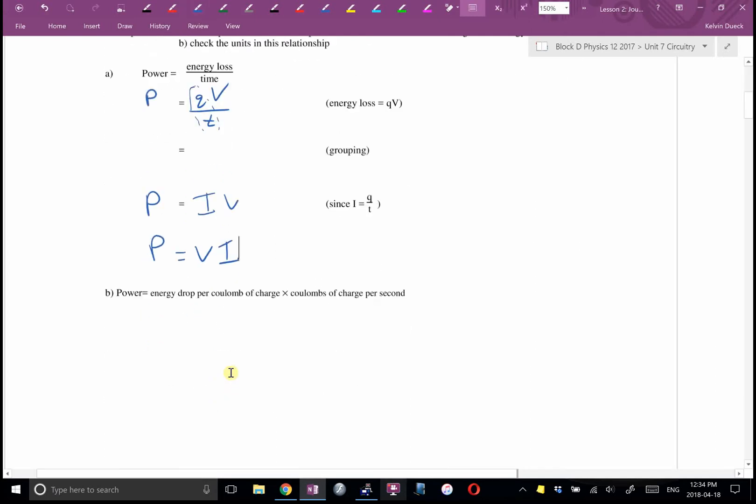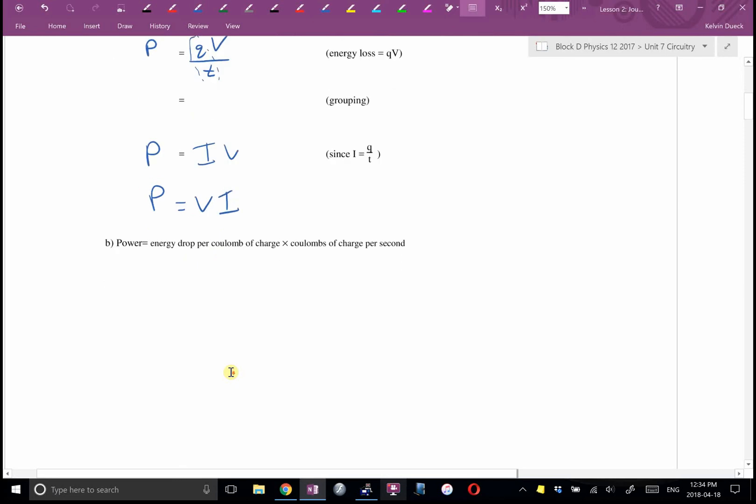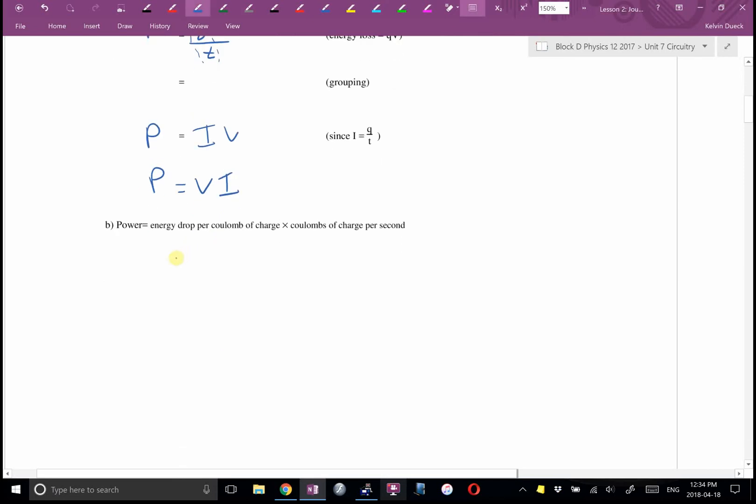And we did the unit analysis. It's going to be joules per coulomb times coulombs per second. And we noticed that the coulombs canceled. Nate looked at his formula sheet and said, that's a joule per second. So this must be power.